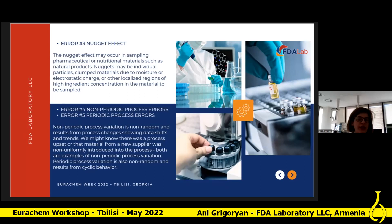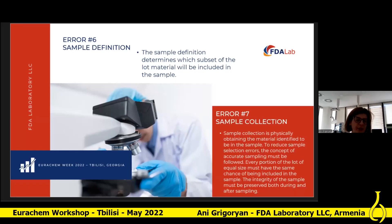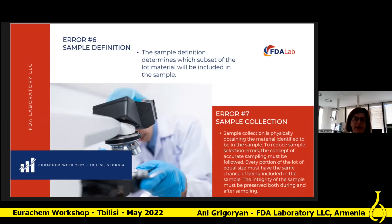Periodical process variation is also non-random and results from cyclic behavior. The sample definition determines which substance of the load material will be included in the sample. Sample collection is the physical obtaining of material identified in the sample definition. To reduce sample selection errors, the concept of accurate sampling must be followed — every portion of the load of equal size must have the same chance of being included in the sample. This principle is the bulk sampling version of simple random sampling. For example, when sampling from a tree, it is important to sample all parts — both bottom and top — because pesticides are not spread the same way.